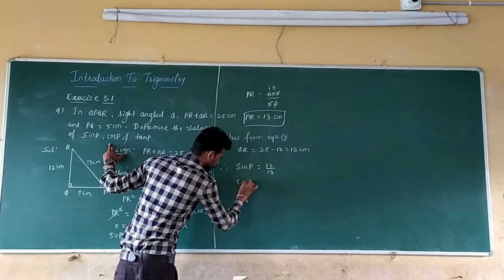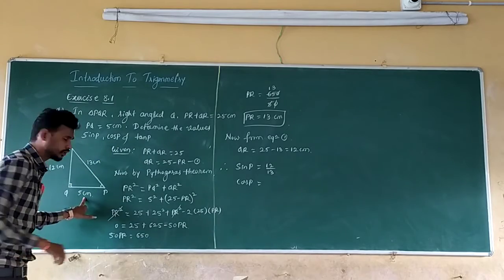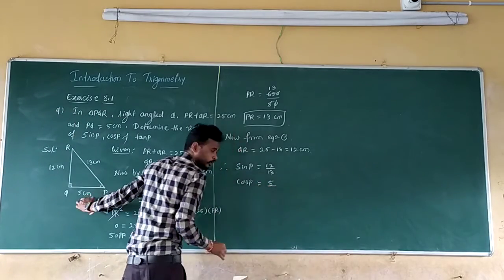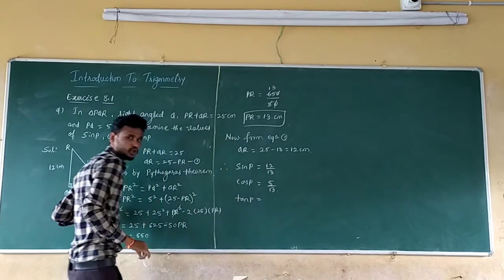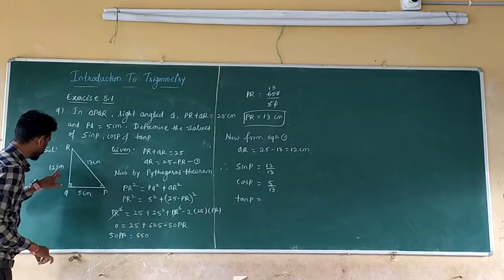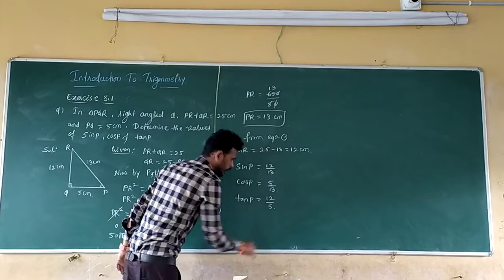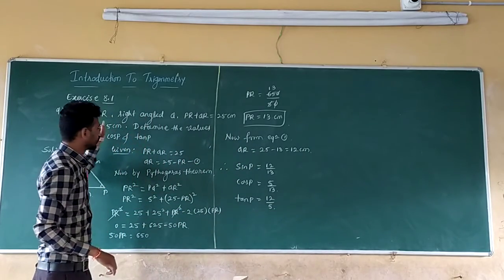Next, cos P, which is equal to adjacent over hypotenuse. For angle P, adjacent is PQ, how much is there? 5 divided by 13. And tan P which is equal to opposite over adjacent. For angle P, opposite is 12 divided by adjacent is 5. So this is the whole solution of question 9.